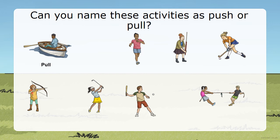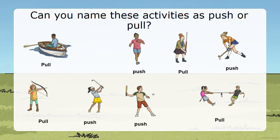Rowing a boat is pulling. Walking is pushing. The bell is pulling. Hockey is pushing. The bow and arrow is pulling. Golf is pushing. Batting the ball is push. And pulling the rope is pull.